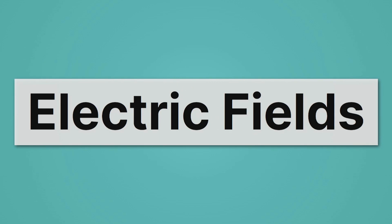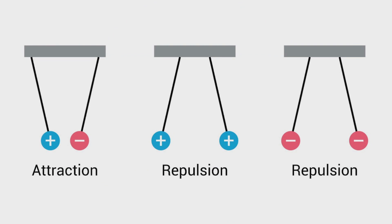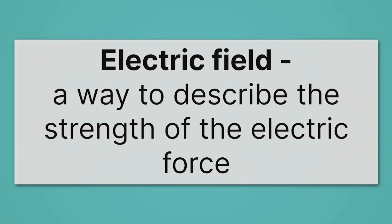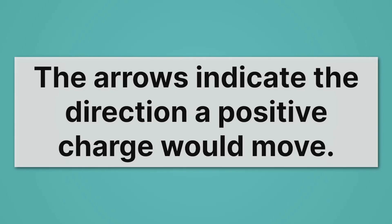If we want to understand what electric fields are, we have to understand the electric force — that is, the force between charged particles. For example, positive and negative things attract, and positive and positive things repel each other, as well as negative and negative things repel each other. So there's a force between these things due to their charge. An electric field is a way to describe the strength of the electric force. Here we have just one charged particle, so there's not actually a force, but if we were to place a charged particle nearby, it would have a force on it. Those arrows describe that force. They're pointing towards the negative sign, and that's the direction electric fields always point — the direction a positive charge would move if placed there.